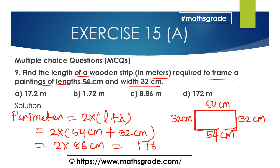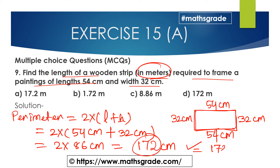2 multiplied by 86 cm gives us 172 cm. Now we have to find this length of wooden strip in meters. We know 100 cm equals 1 meter, so 172 cm divided by 100 equals 1.72 meters.